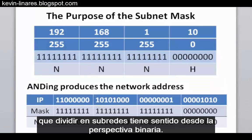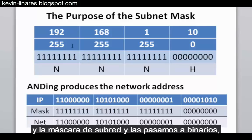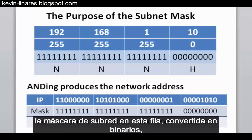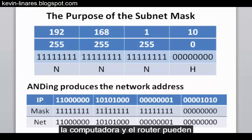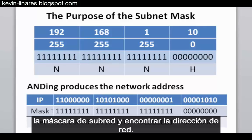Subnetting makes sense from the binary perspective. When we take the IP address and the subnet mask and convert them to binary — the IP address on one row and the subnet mask on another — the computer and the router are able to logically AND, or combine, the IP address and the subnet mask to find the network address.